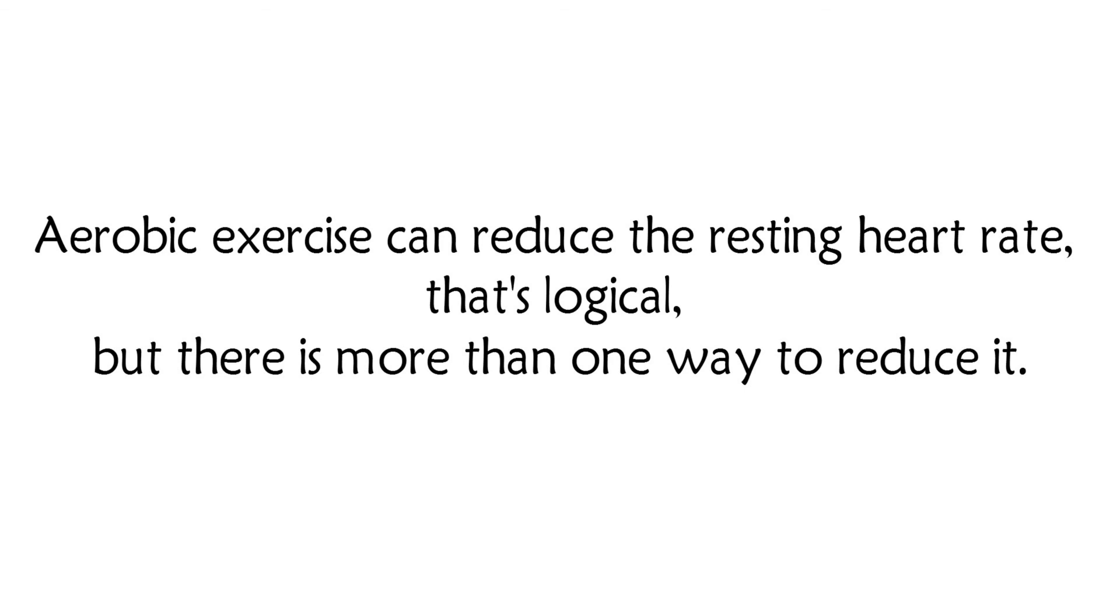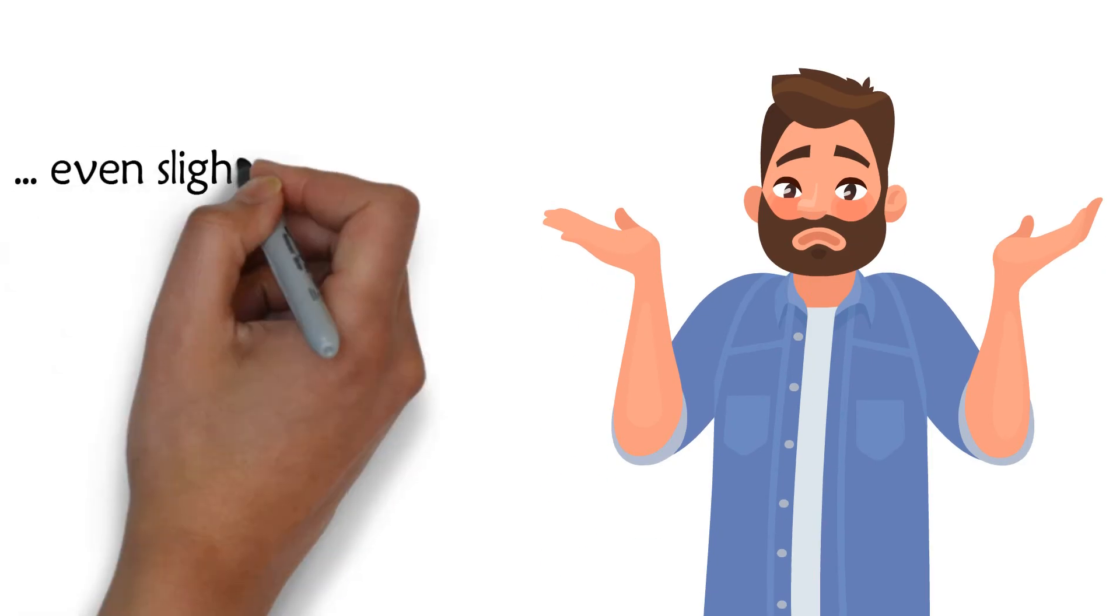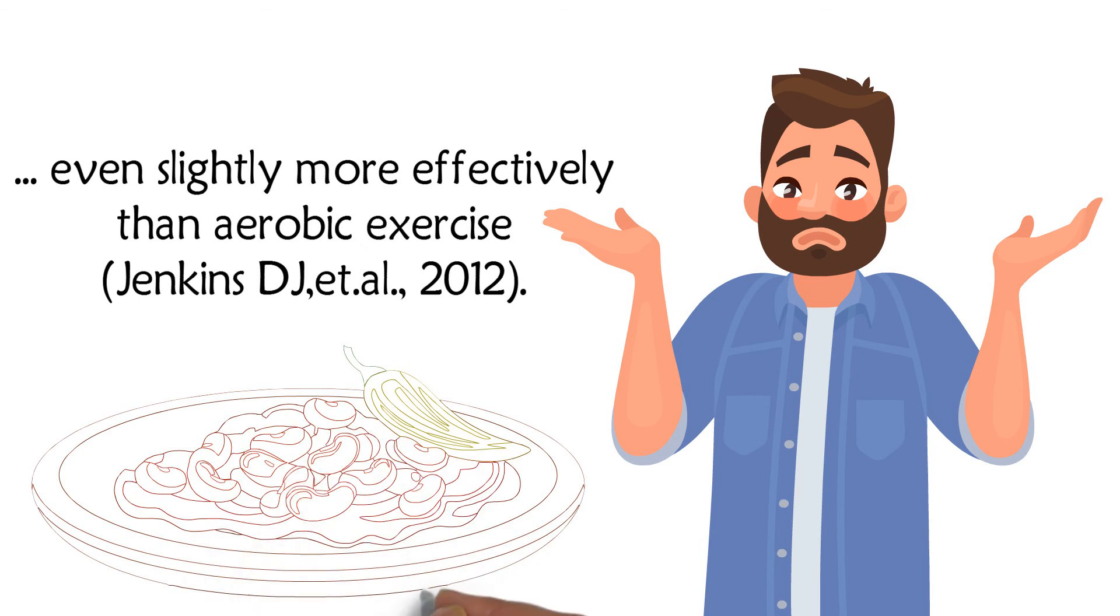Aerobic exercise can reduce resting heart rate—that's logical—but there's more than one way to reduce it. One type of food is shown to do it even slightly more effectively than aerobic exercise. That food was beans.